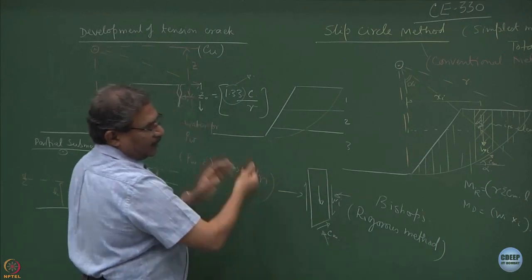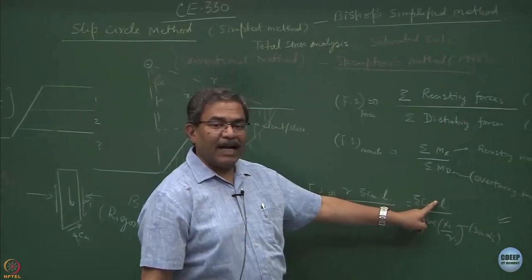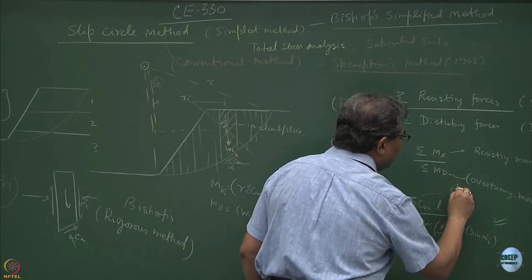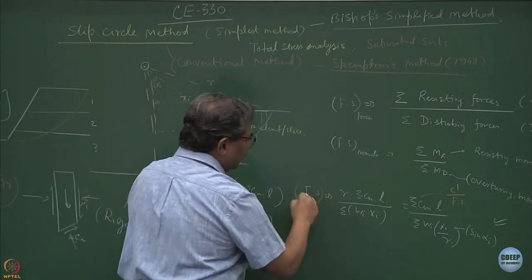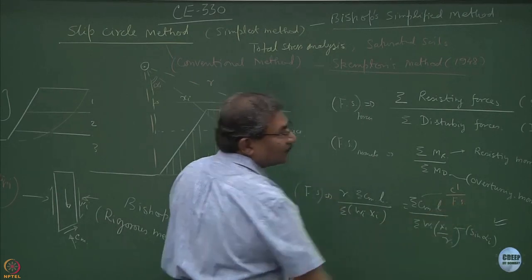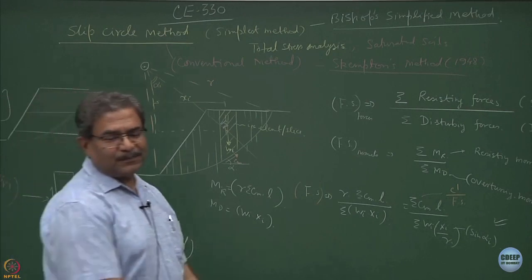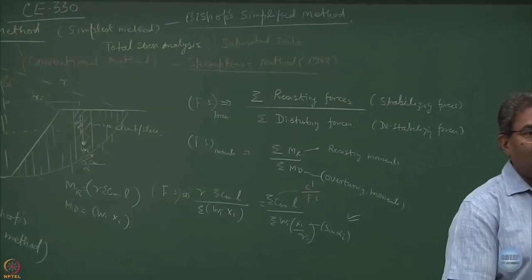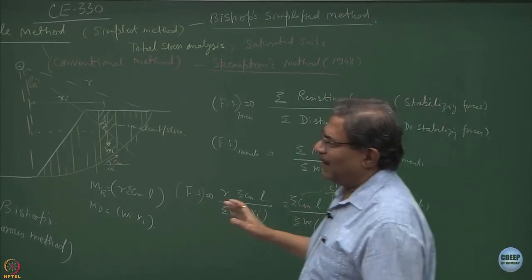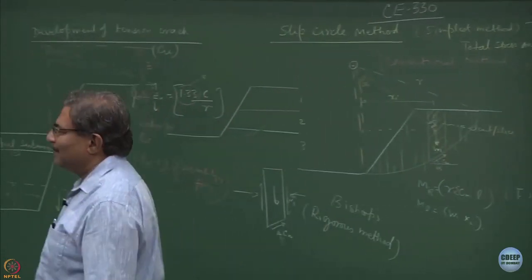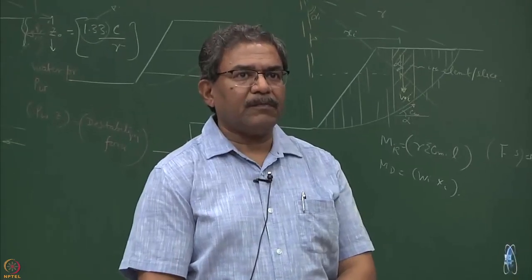Most of these methods are going to be trial and error. Why? Simple logic: the factor of safety is a function of C mobilized, and C mobilized is truly a form of C prime over factor of safety. That means on the left-hand side we have a factor of safety term, and on the right-hand side also we have a factor of safety term. So you have to do iterations — trial and error. As I said, during our days we used to take slip surfaces, plot them on graph paper, analyze them — it used to take days to solve one problem. But now the world has changed; there are several commercially available softwares which can be utilized.